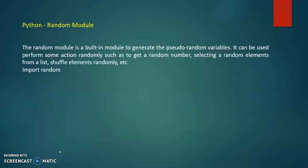The random module is a built-in module to generate pseudo-random variables. It can be used to perform some actions randomly, such as getting a random number, selecting a random element from a list, shuffling elements randomly, etc. If we use randomized numbers, we will use the random module to generate floating point values, integer values, and to select and randomize elements in a sequence.